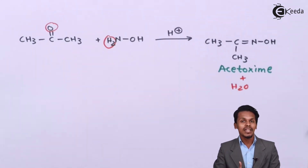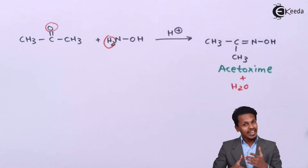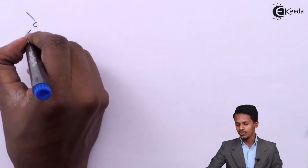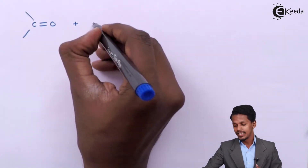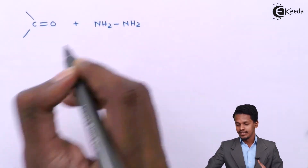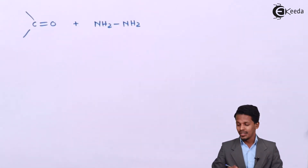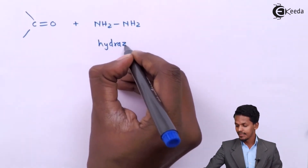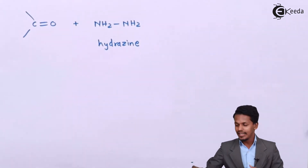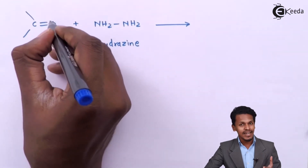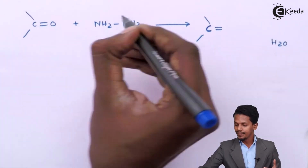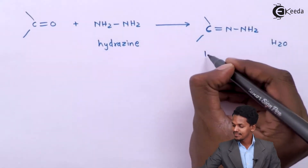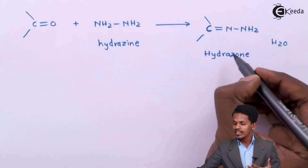A similar reaction is also possible with derivatives of hydroxylamine. For the general reaction, consider an aldehyde or ketone (C=O) treated with a derivative of hydroxylamine — for example, hydrazine, which is NH₂-NH₂. The reaction proceeds similarly: H₂ along with the oxygen atom is removed as H₂O, and the product formed is C=N-NH₂. This product is called a hydrazone.